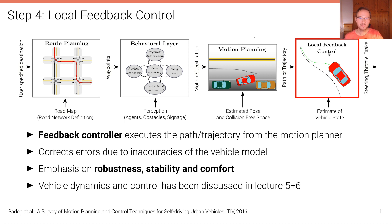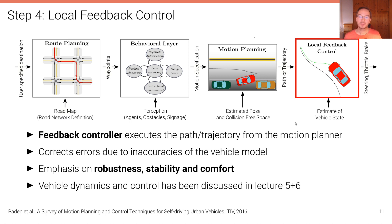Finally, local feedback control takes in the path or trajectory from the motion planning stage and executes it, correcting errors due to the inaccuracy of vehicle models — just as we saw in the lecture on vehicle control. The emphasis during control is on robustness, stability, and comfort, and most vehicles are already equipped with sophisticated low-level controllers today. The content of today's lecture covers the first three blocks — route planning, behavioral layer, and motion planning — since vehicle control was already covered in lectures 5 and 6.